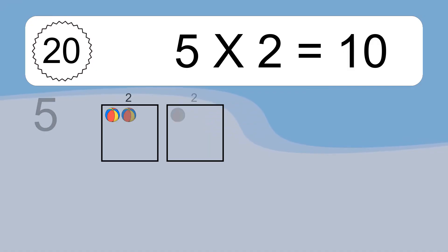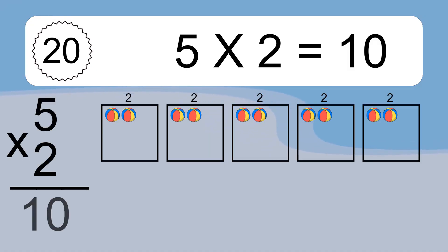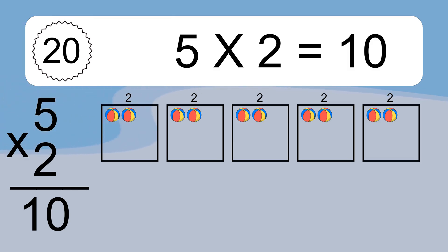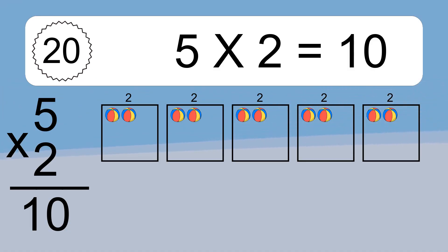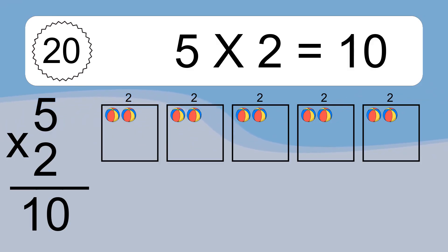5 times 2 equals what? 5 times 2 equals 10. We have 5 boxes, and each box has 2 colorful balls inside. If you count all the balls in all the boxes together, you will have 5 times 2 balls. This equals 10 balls.